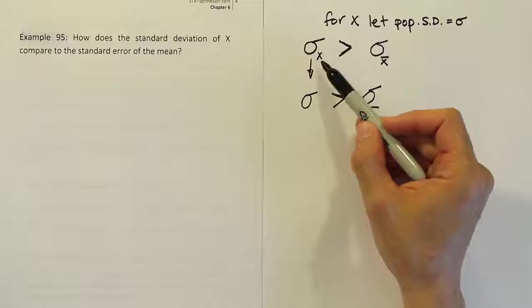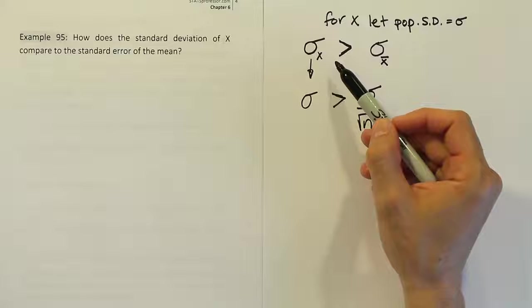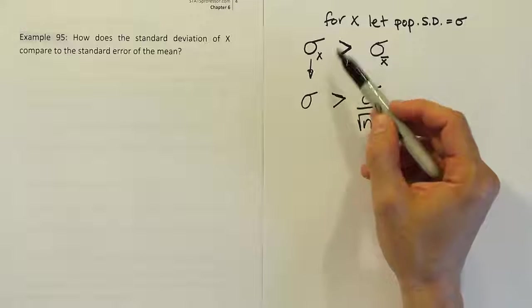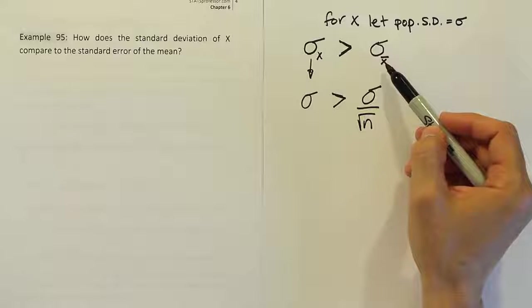When we look at the individual students in the class, they would have lots of variation. Some people would fail, some would achieve perfection on the test, get hundreds, others would get C's. There'd be a lot of variation in individual scores. When you look at the class averages as a whole, they're all going to be roughly around